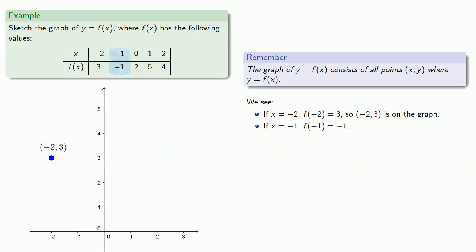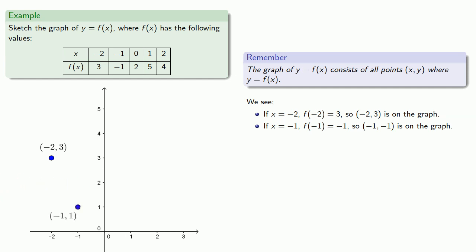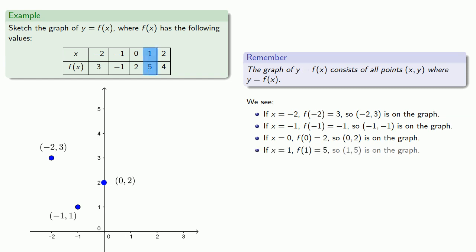If x equals negative 1, f of negative 1 is negative 1, so negative 1, negative 1 is on the graph. If x equals 0, f of 0 is 2, so 0, 2 is on the graph. If x equals 1, f of 1 is 5, so 1, 5 is on the graph. If x equals 2, f of 2 is 4, so 2, 4 is on the graph.